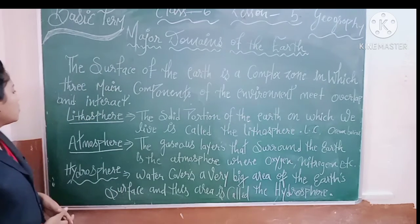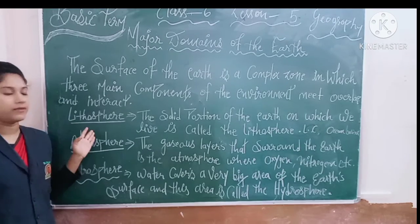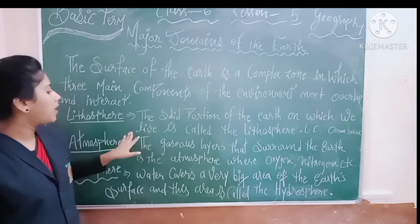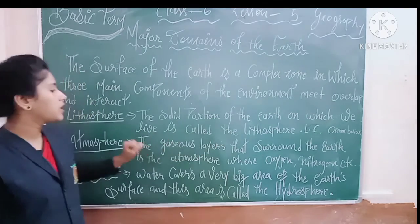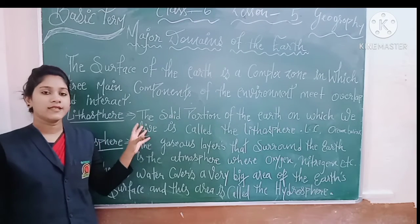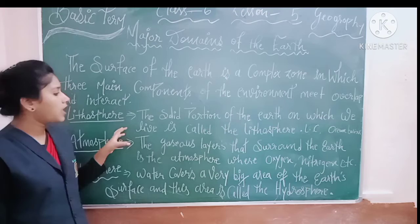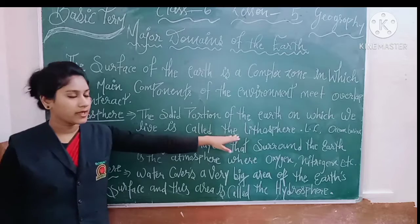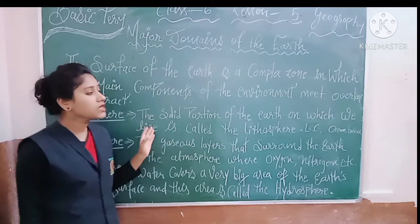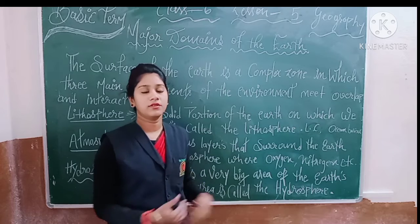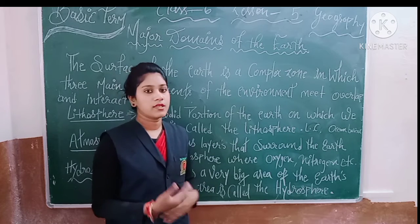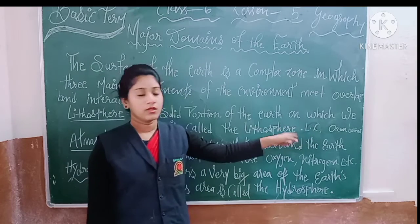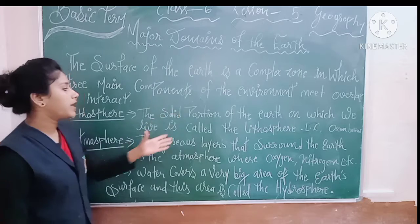Now this is your lithosphere. So what is lithosphere? Lithosphere is the solid portion of the earth on which we live, and it is called the lithosphere. The solid portion of the earth means large land masses and ocean vessels. So all these things — continents and oceans — are part of our lithosphere.